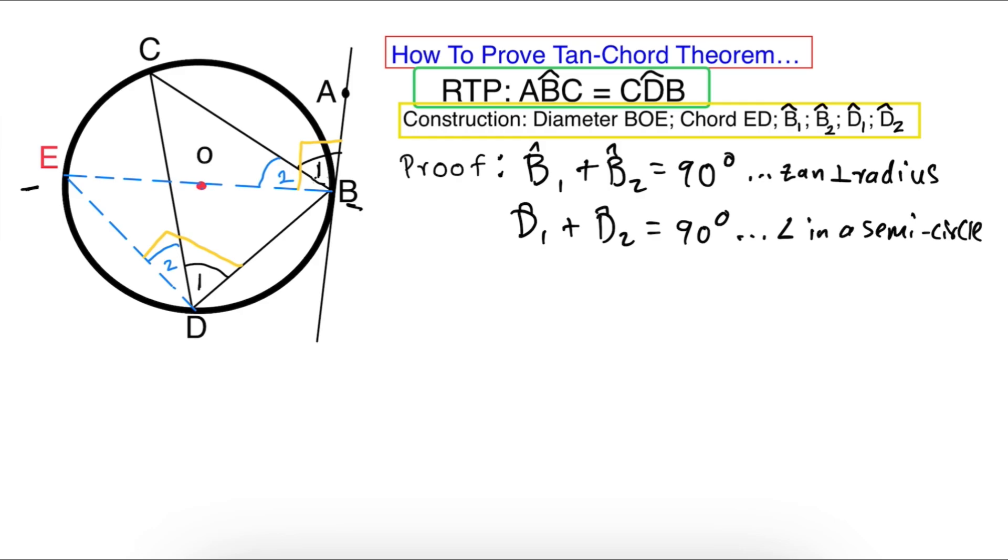Now this is the interesting part. Remember we are proving the ones, right? If we are proving the ones, just say the twos are equal. Come on, the twos are equal, they gotta be equal. So I'm just gonna write: B₂ is equal to D₂.